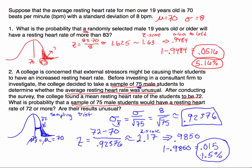Is this unusual? Yes, this is unusual — having a sample mean of 72 has only a 1.5% chance of occurring. The reason we use the standard error of 0.92376 is because we want to know the relative position of this mean versus all the other means. Everything else is exactly the same as the previous problem. The only difference is that since we're talking about a sampling distribution, we find the standard error. How did I know? The problem says 'a sample of 75 students' and asks whether the average was unusual — those are the key words to look for.